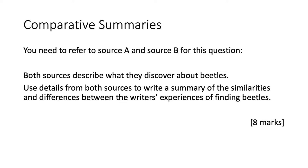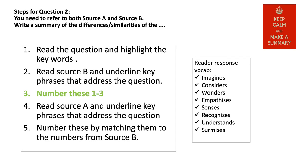You need to refer to both source A and source B for this question. Here is the task: use details from both sources to write a summary of the similarities and differences between the writers' experiences of finding beetles. You have been asked to write a comparison, and this is worth eight marks. Step two asks you to read source B. You have already read source A to answer question one, so it makes sense to start with source B for question two. As we read, you are underlining the key phrases that address the question — we are focusing on the writer's experiences of finding the beetle.